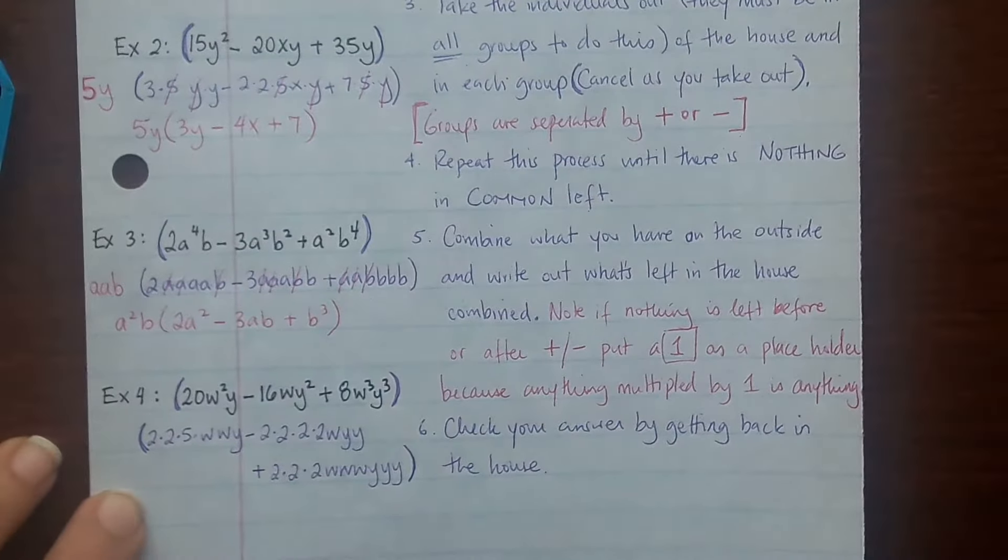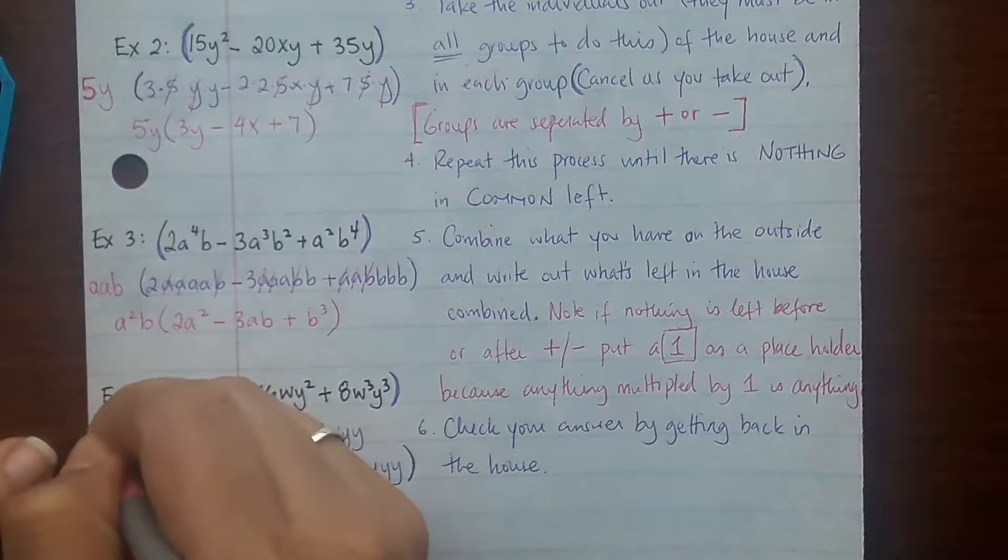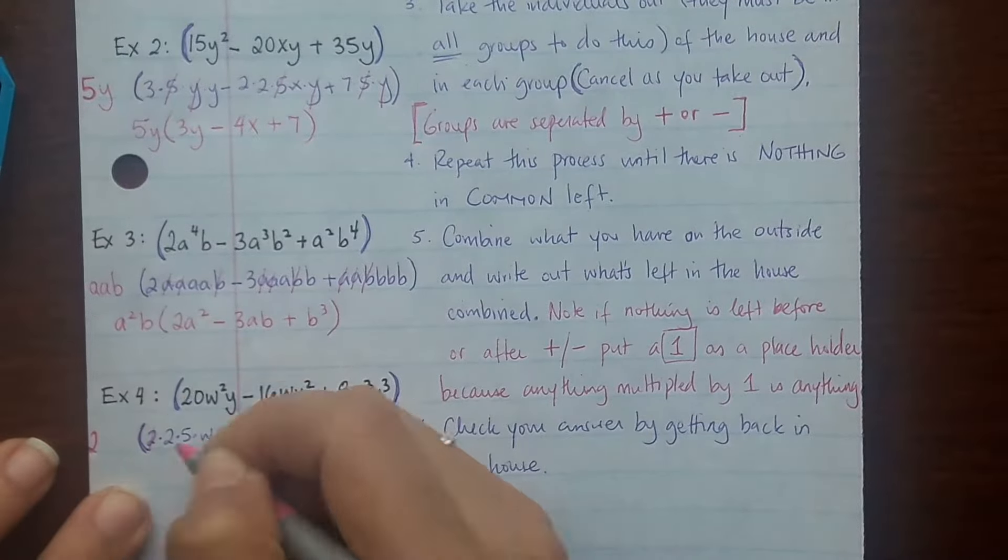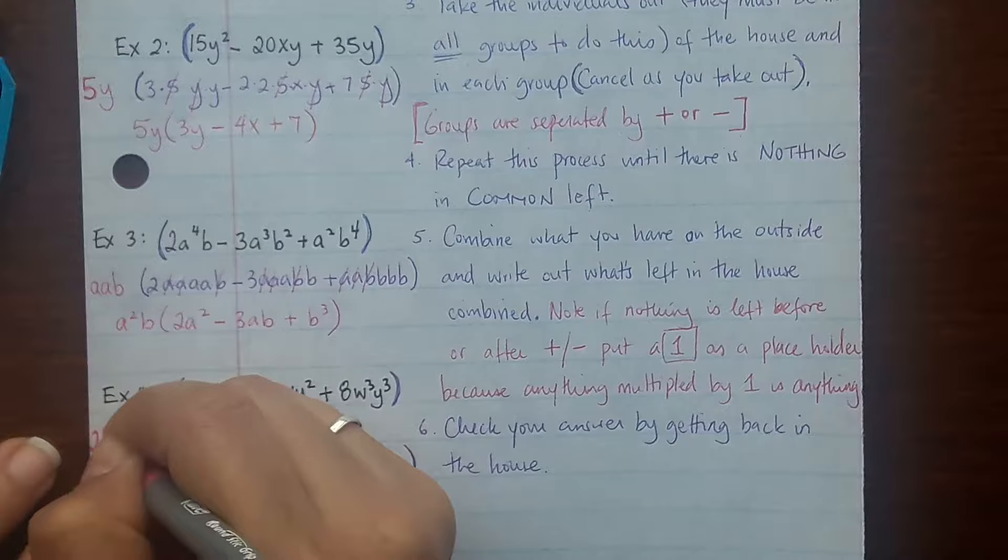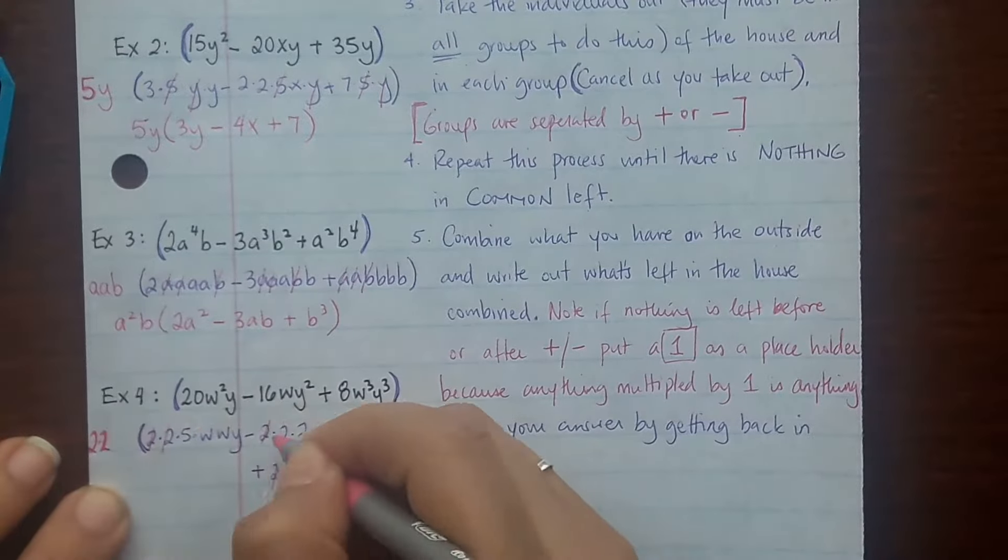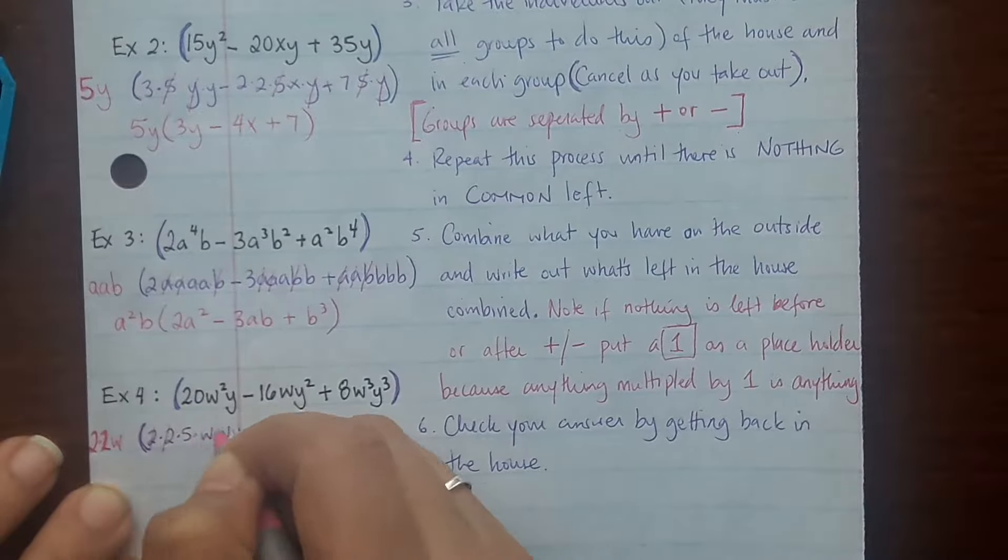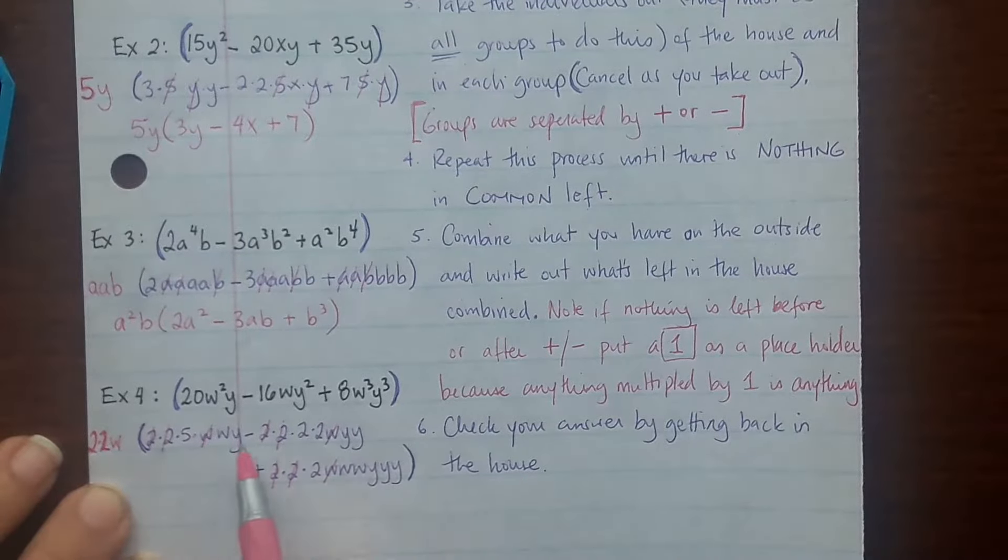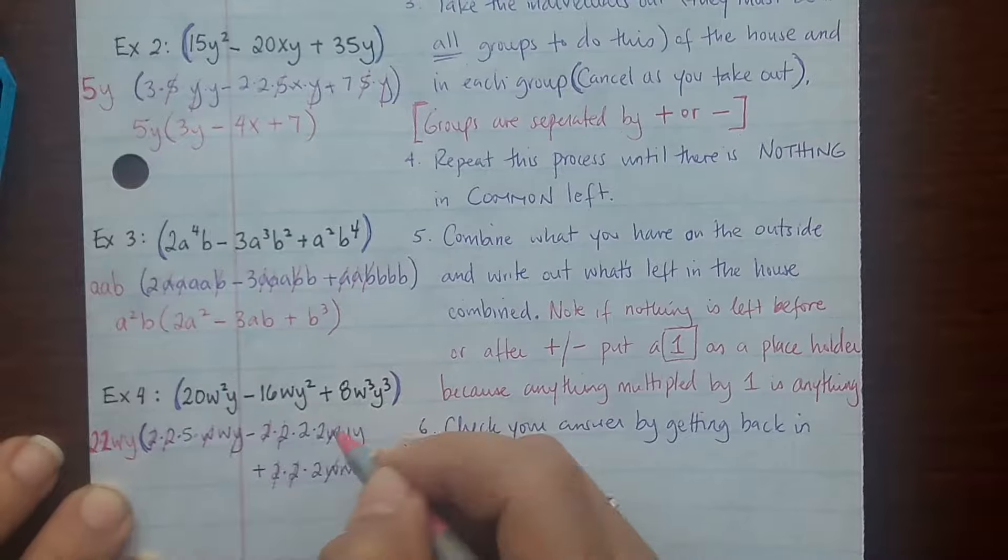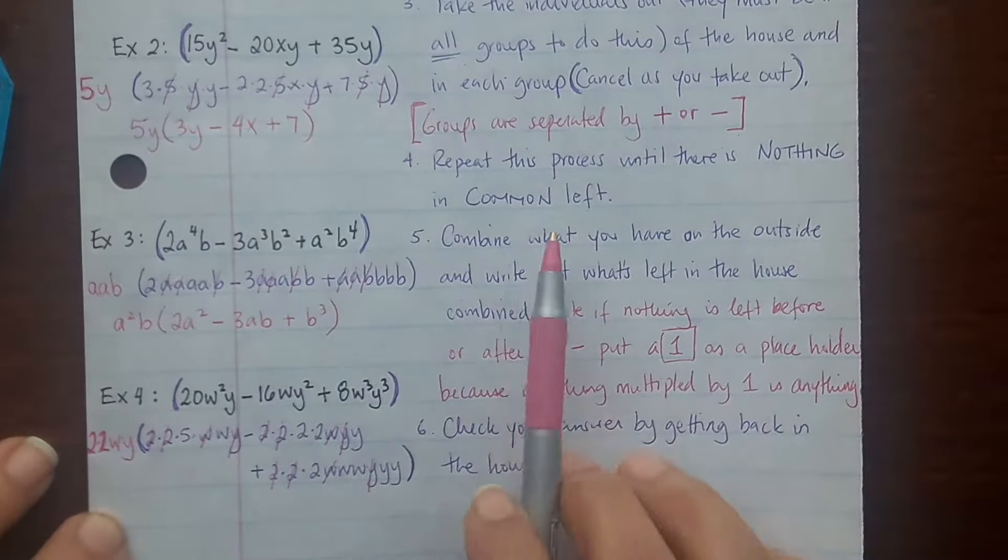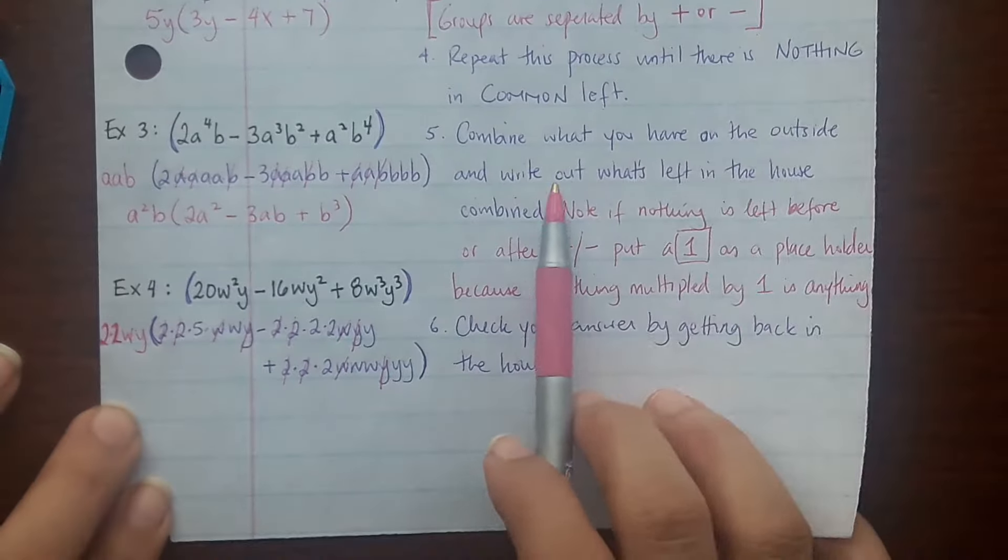Alright, so now let's take them out. Let's look at numbers. I can take out a 2 from all of them, and cross them out. I can still take out another 2. Cross them out. I can't take out any more numbers. How about w? Cross them out, out of every group. What else? Y. Cross them out. And you can see that there's nothing in common in all 3 groups. So that's it.